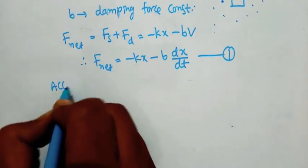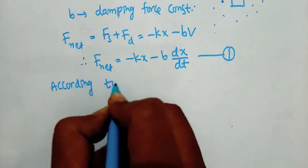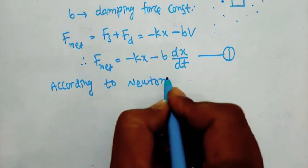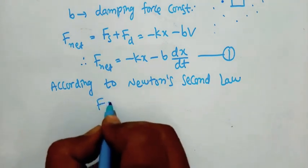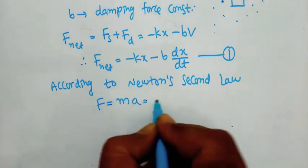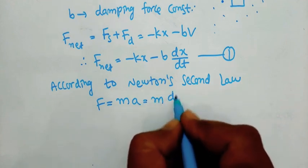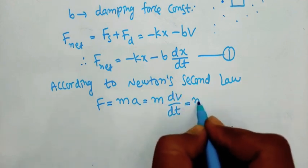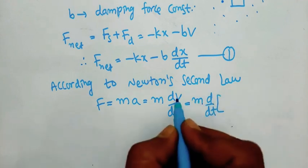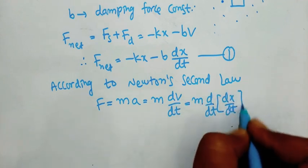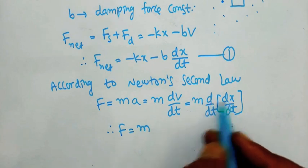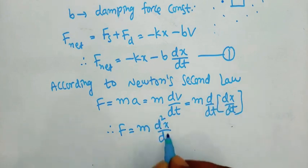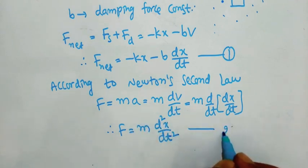According to Newton's second law, F is equal to MA. Here acceleration is the rate of change of velocity, so that is M times d by dt of velocity. Since velocity is the rate of change of displacement, F is equal to mass into d²x by dt². So acceleration can be written as d²x by dt². Let us take this as equation 2.